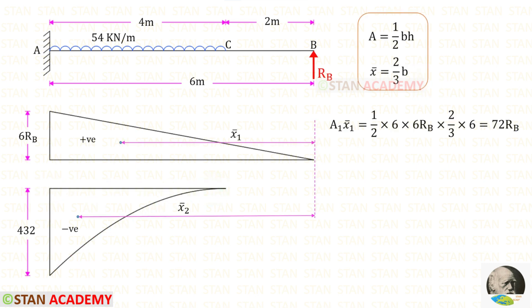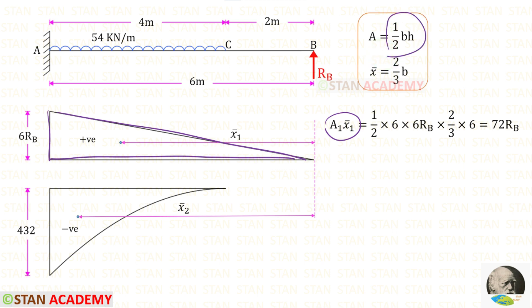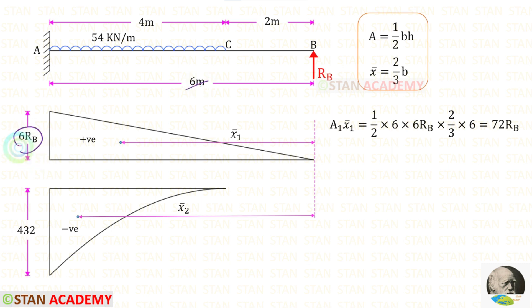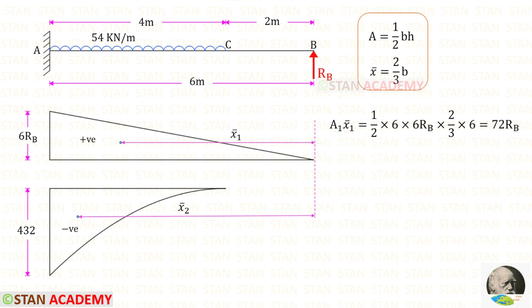Now let us find Area 1 and X1 bar. We know that it is a triangle, and we know the area formula of a triangle. Here the breadth is 6 and the height is 6RB, so this gives us the area. Now we have to find the centroid distance X1 bar about the right. The formula is 2/3 into B. Here the breadth is 6, so 2/3 into 6.